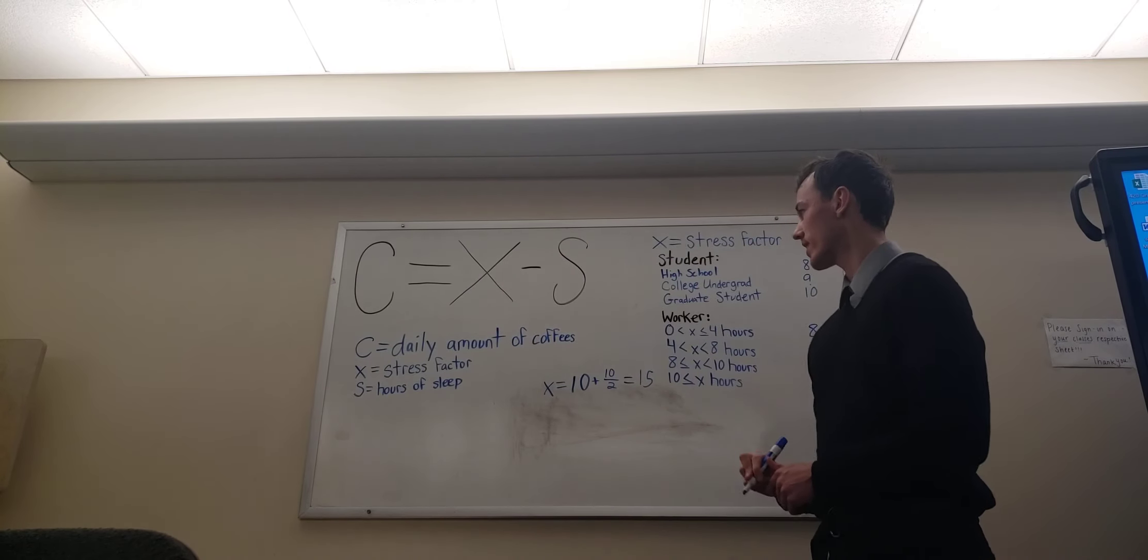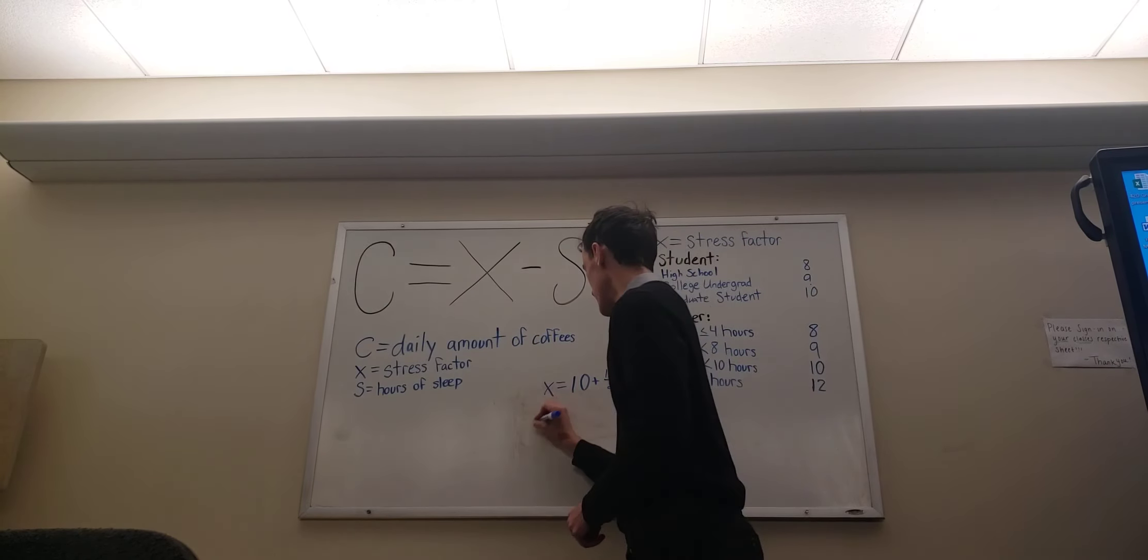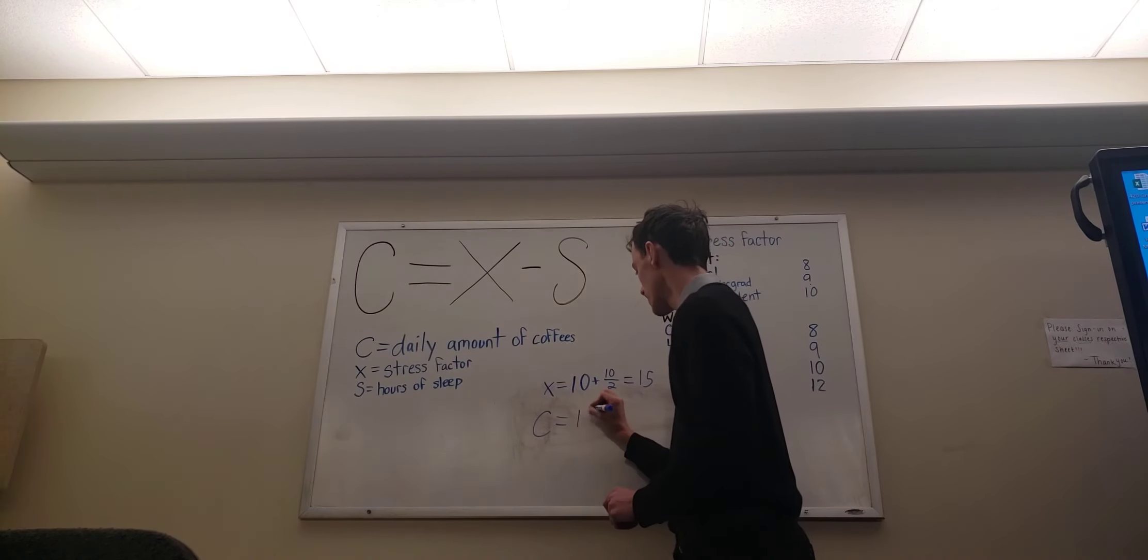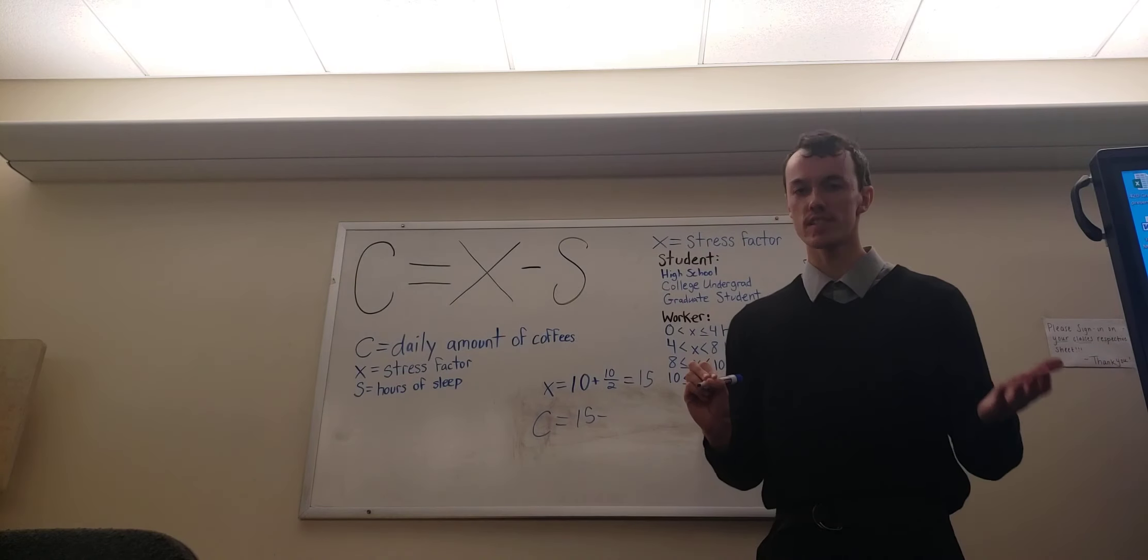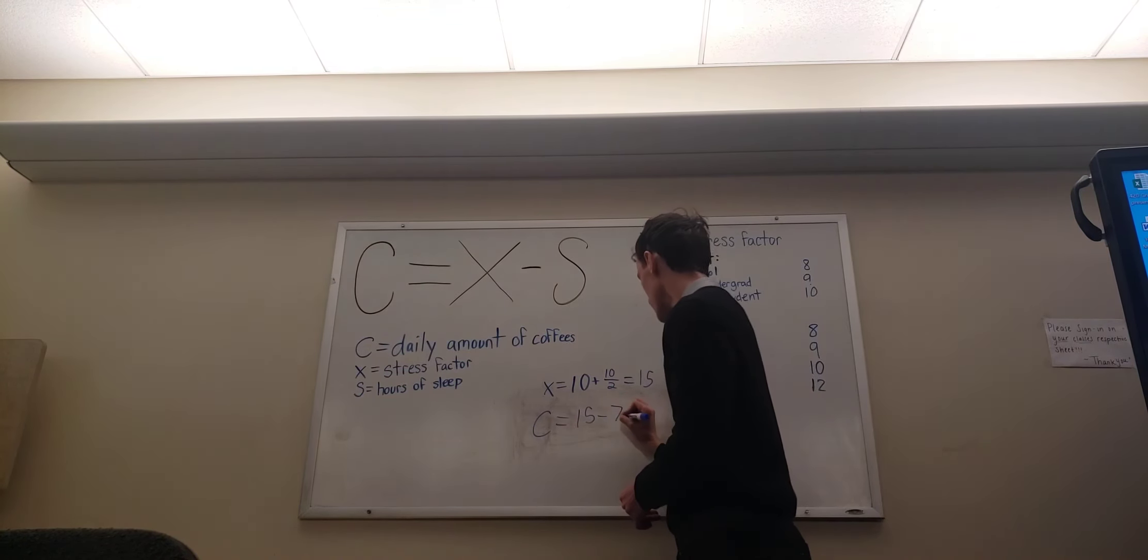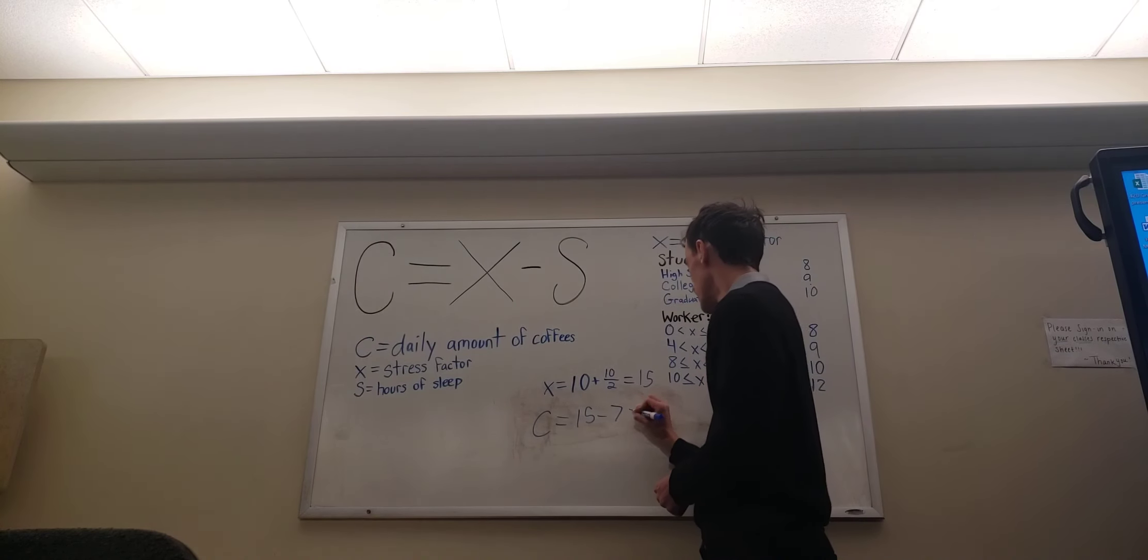So you plug that 15 in for X in the formula. So you got your C, your coffees, which should be 15 minus the hours of sleep, which I got with 7 that previous night. I slept well. So 15 minus 7 equals 8.